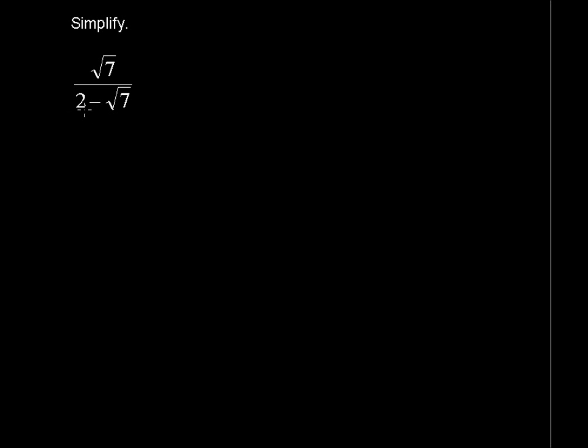So if we multiply this by the square root of 7, we would still have 2 times the square root of 7 in the denominator. So we need to do something with something called the conjugates.